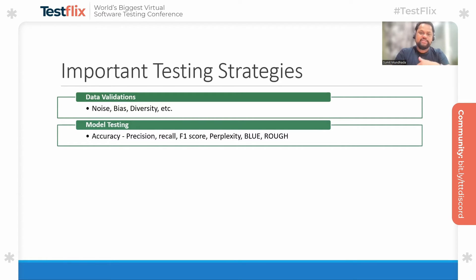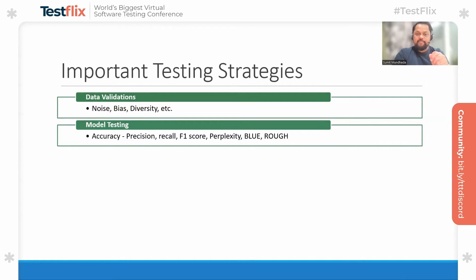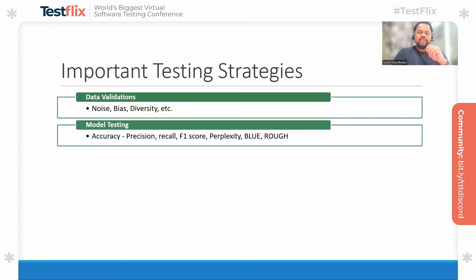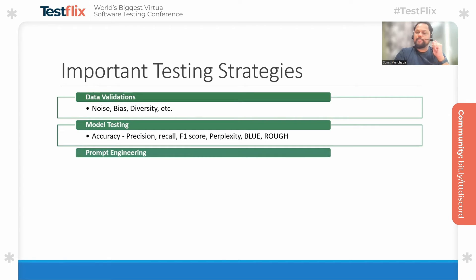There are many common evaluation metrics present such as accuracy, precision, recall, F1 score, and so on. If we are dealing with natural language processing, perplexity — for example, the probability of the next word in a given sequence — can also be used as an evaluation metric. Similarly, there are others like BLEU and ROUGE. These kinds of evaluation metrics have to be used while doing model evaluation.